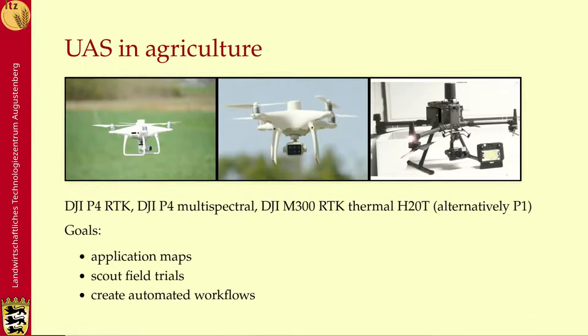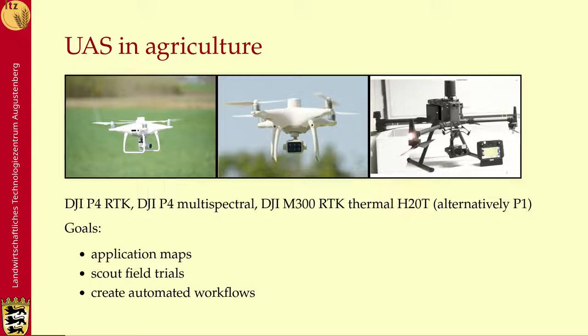Flying UAS is the first thing you have to do. What we use are special agricultural UAS — for example, the DJI P4 RTK with an RGB sensor, the DJI P4 Multispectral which has additional infrared channels, and an M300, a larger model also with RTK and thermal camera. Alternatively, there is a P1 with a high resolution RGB camera.